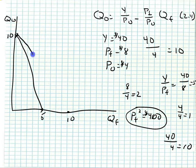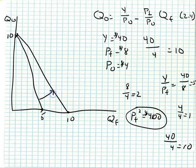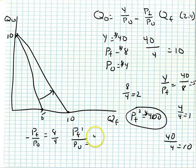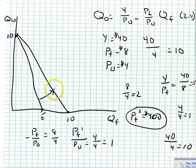By halving the price of food, I can double the amount of food the household can buy — its purchasing power has increased. The old slope P_f over P_o was 8 over 4; the new P_f over P_o is 4 over 4, which equals 1. There is now a one-to-one trade-off between food and other goods. I have changed both the slope and the location of the budget line.